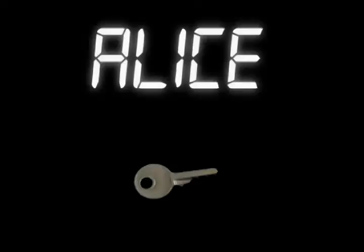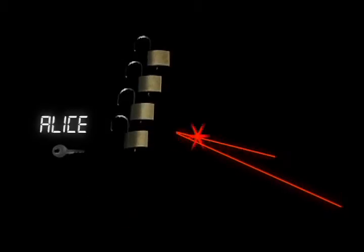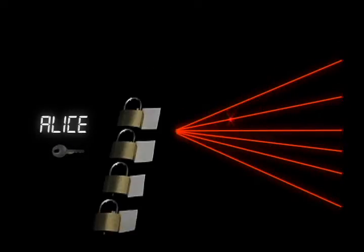Alice could buy a lock, keep the key, and send the open lock to Bob. Bob then locks his message and sends it back to Alice. No keys are exchanged. This means she could publish the lock widely and let anyone in the world use it to send her a message. And she now only needs to keep track of a single key.